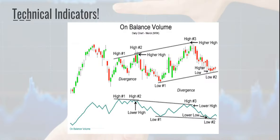The next technical indicator is On Balance Volume. It is a volume indicator, meaning it does not just look at price movement but also takes volume into consideration. It sees how much volume is being traded at any point in time and combines it with price to see the overall buying and selling pressure. This indicator helps you decide how strong a particular trend is, which will help in making pricing decisions going forward.